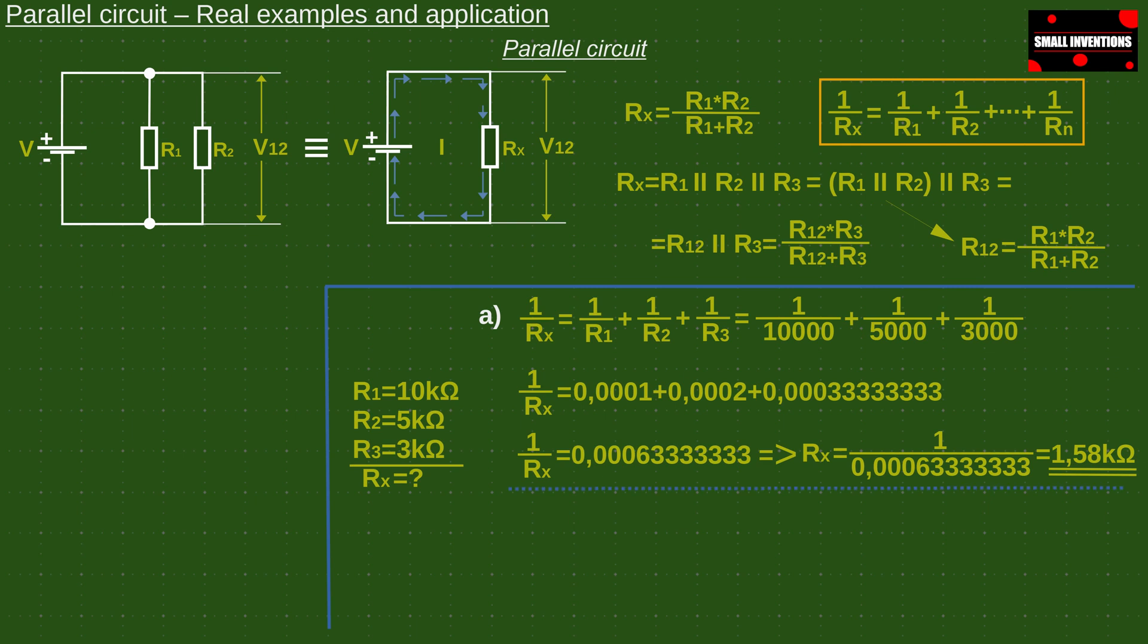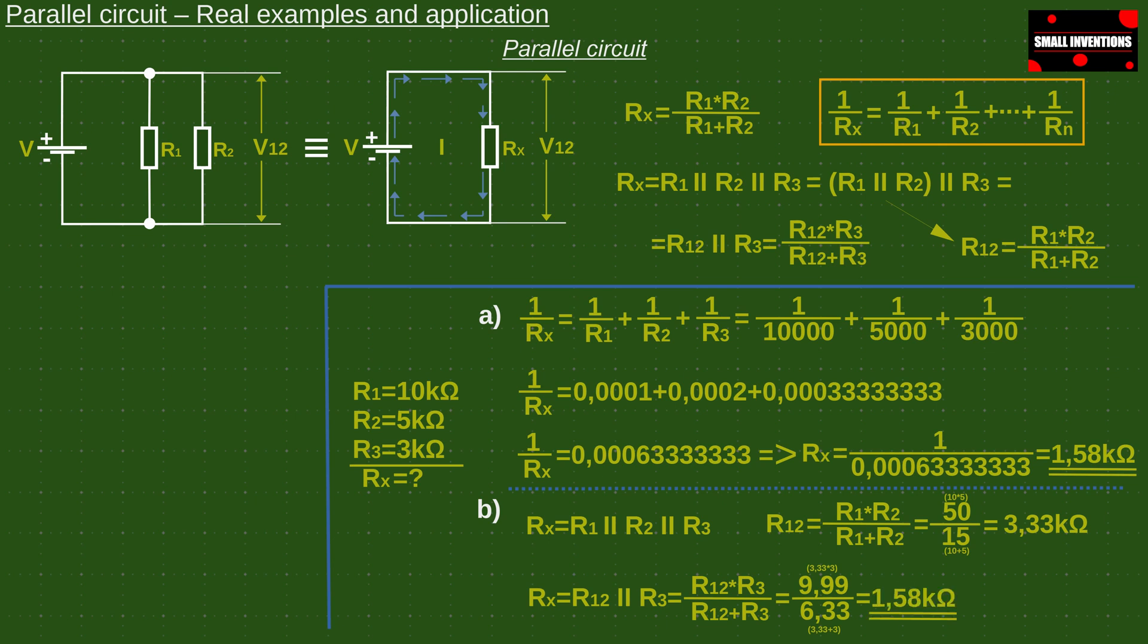If we calculate the total resistance in another way then we will first calculate the resistor R1-2. Then we include this value in the new equation and associate the resistor R3. The total resistance Rx is also 1.58 kilo ohms. So just pick which way you prefer and that is all.